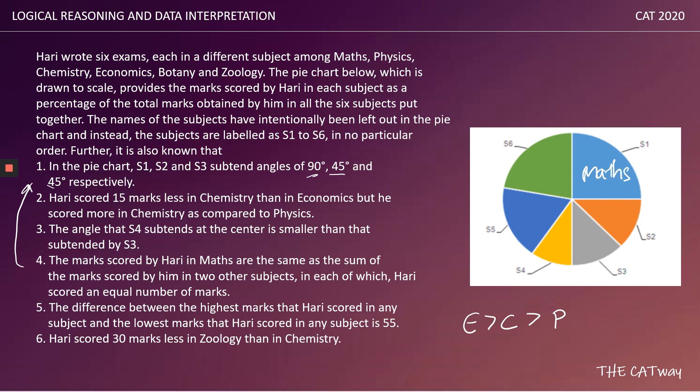The fifth condition: the difference between the highest and lowest marks scored by Harri across all subjects is 55. Also, Harri scored 30 marks less in zoology than in chemistry, so chemistry > zoology. This means chemistry is greater than at least two subjects, and economics is greater than at least three subjects.